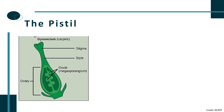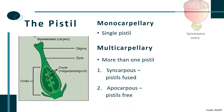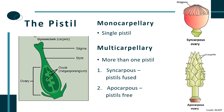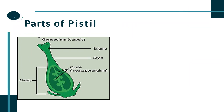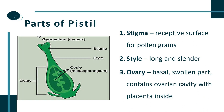The free occurring unit of gynoecium is known as pistil, and a pistil may contain one or several carpels. On this basis, there are monocarpellary or multicarpellary pistils containing one or several carpels respectively. A multicarpellary pistil may have fused or free pistils, constituting syncarpous or apocarpous arrangement.